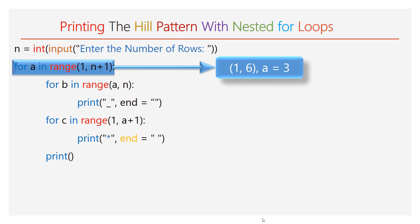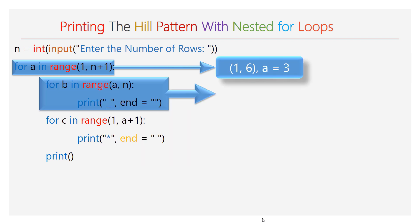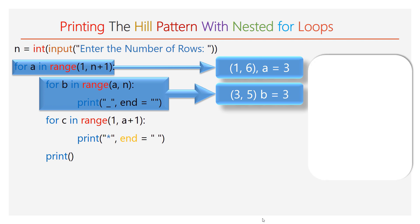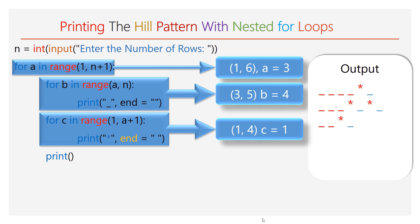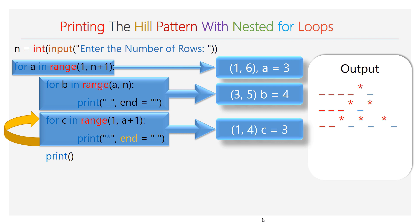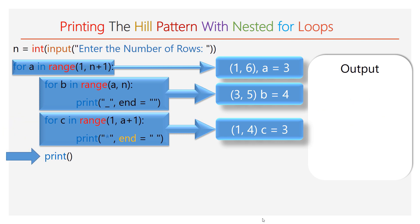Now the value of a will be 3. The first inner for loop will have range 3 to 5, iterating only 2 times, adding one space each iteration. Next, the second inner for loop will be executed with range 1 to 4, iterating 3 times. During each iteration, one star along with a space will be printed, so finally 3 stars are printed. The empty print function is executed and the cursor moves to the fourth line.